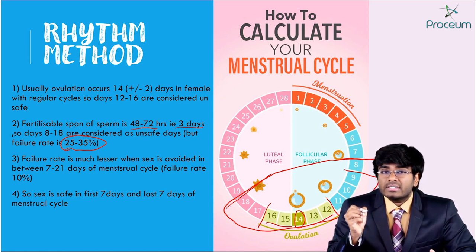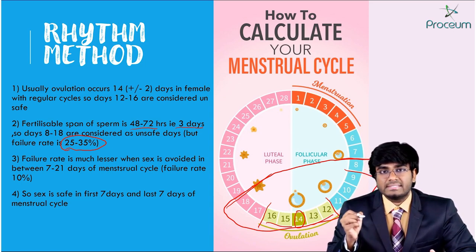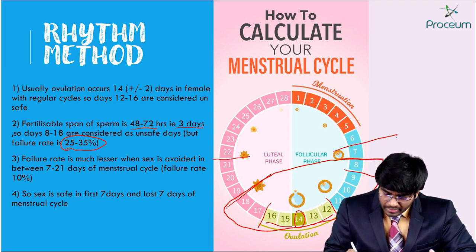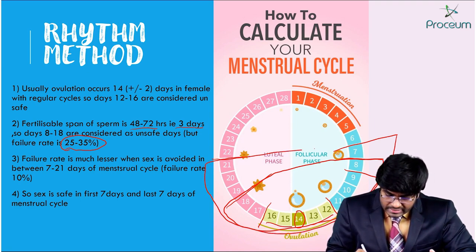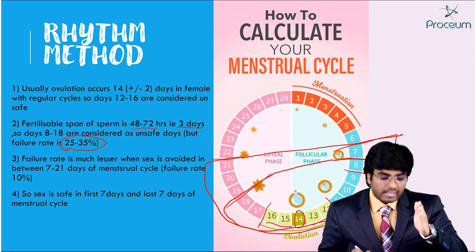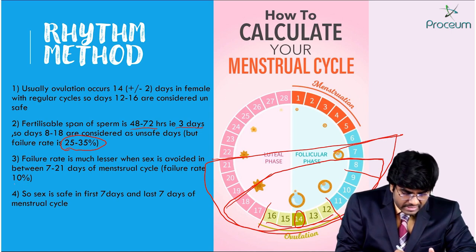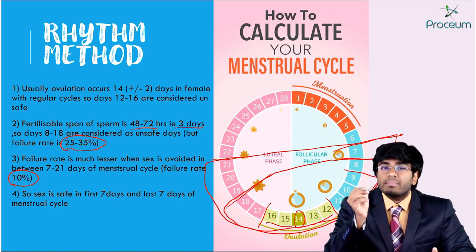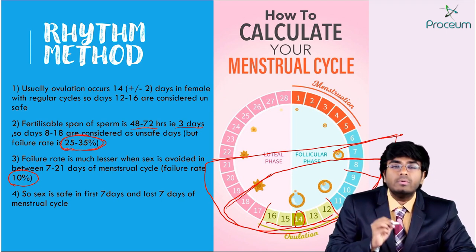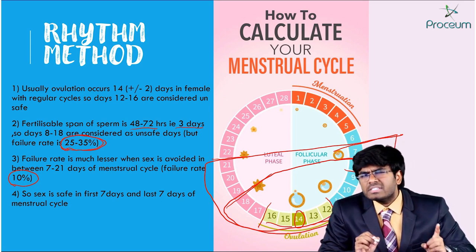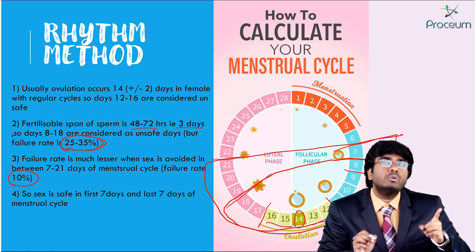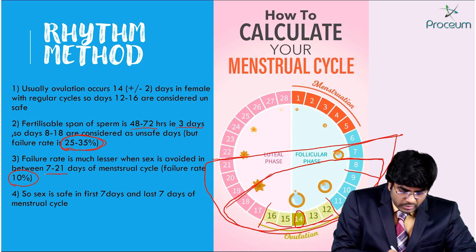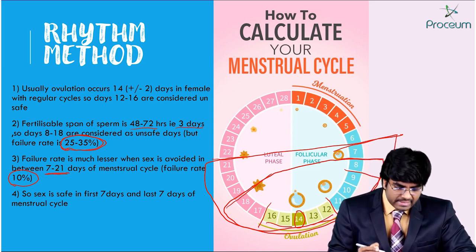Doctors have advised not to participate in sex from days 7 to 21. If the couple does not participate in intercourse from day 7 to 21, the failure rates are much lesser — coming down to 10 percent. Whereas when avoiding only days 8 to 18, the failure rate is almost 25 to 35 percent. So unsafe days are 8 to 18, but days 7 to 21 are the recommended avoidance period.